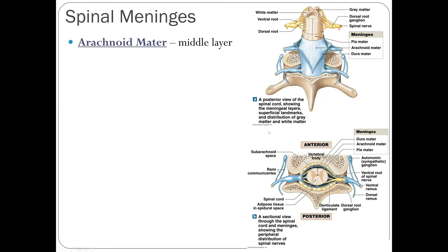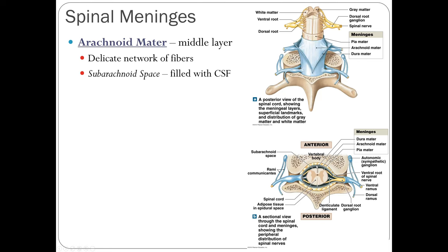The middle layer is the arachnoid mater — named for its spider web-like appearance, as arachnoid means spider. It is a delicate network of fibers. Beneath the arachnoid mater is the subarachnoid space, where cerebrospinal fluid (CSF) circulates. This is the same CSF that circulates around and within the brain, constantly moving throughout the entire central nervous system in the subarachnoid space.